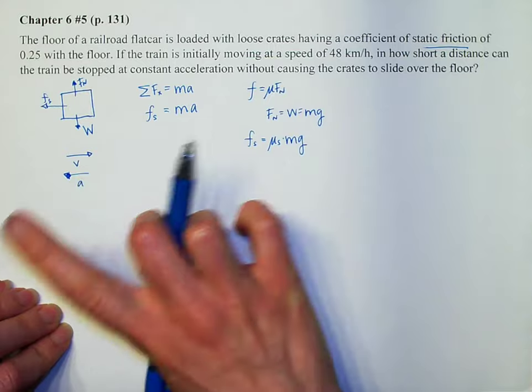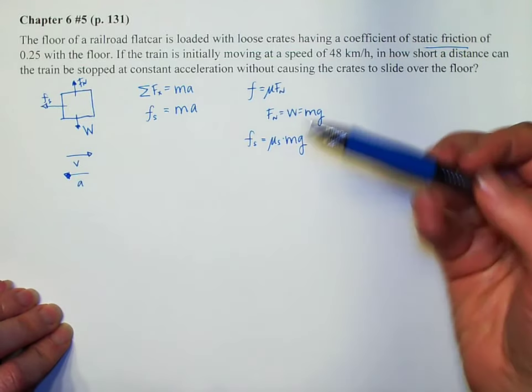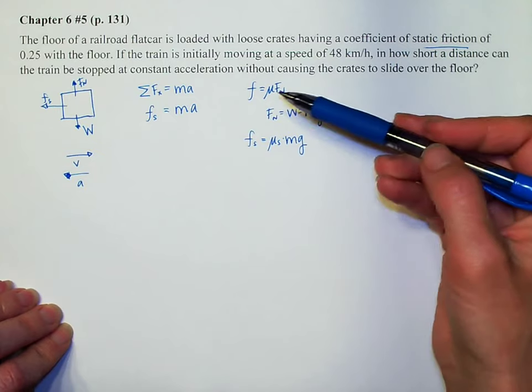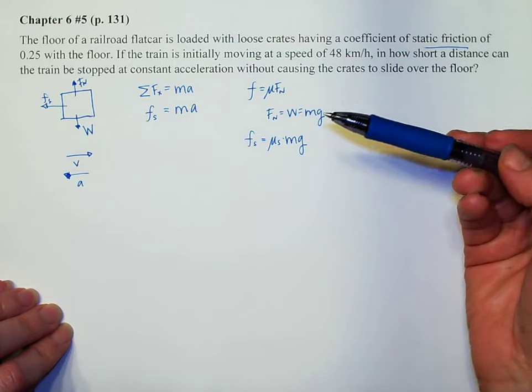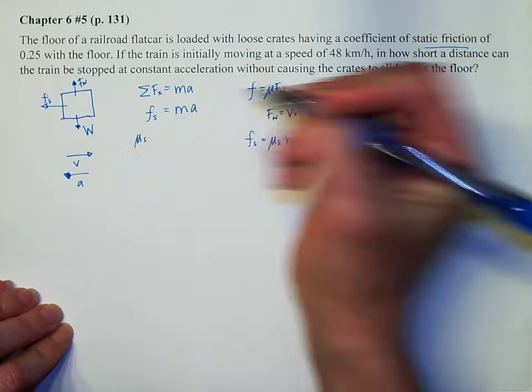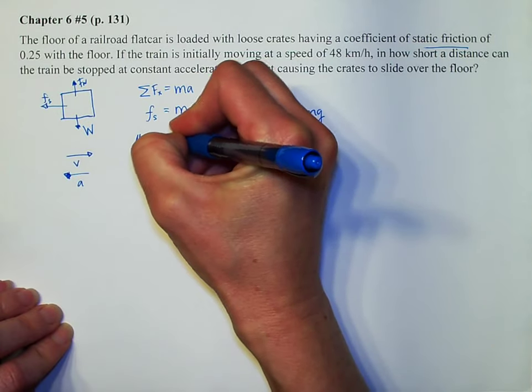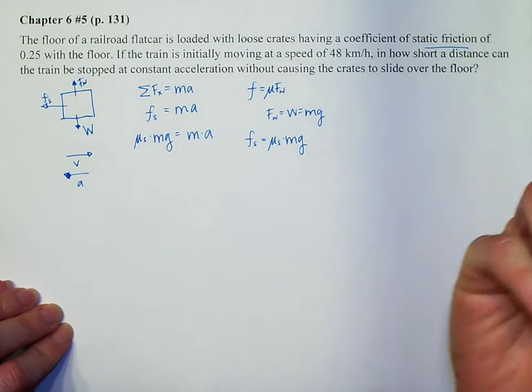At this point, you might have no idea how you're going to get to the end of this problem. But a really good strategy is just to work through what you know. And then eventually, you will hopefully come up to something that makes some more sense. So I'm going to plug this in over here. So mu s times mg equals mass acceleration.